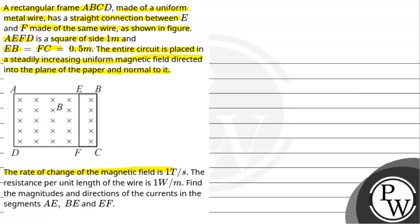The rate of change of magnetic field is 1 tesla per second. The resistance per unit length of wire is 1 ohm per meter. Find the magnitudes and directions of current in the segments AE, BE, and EF.